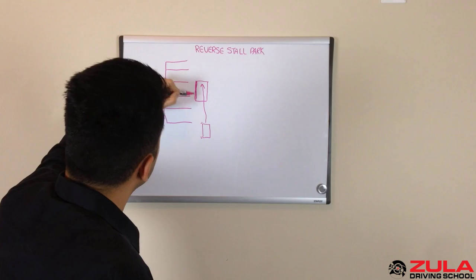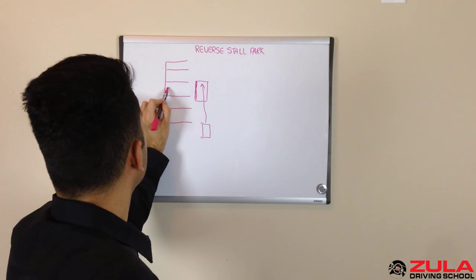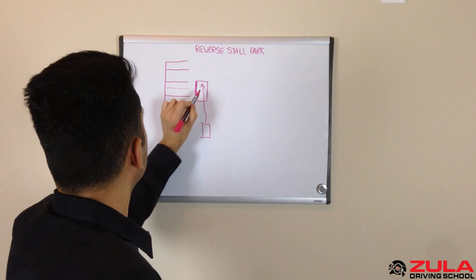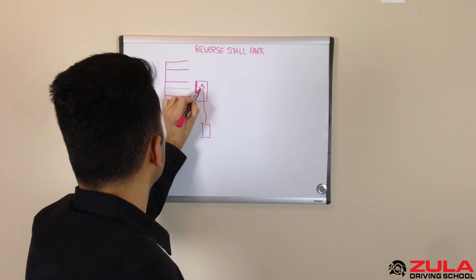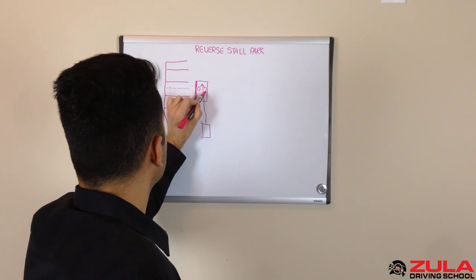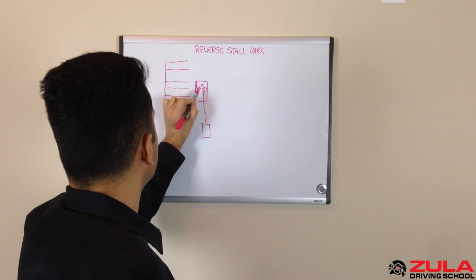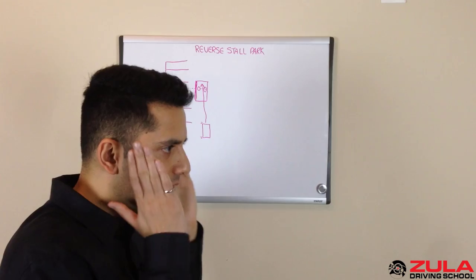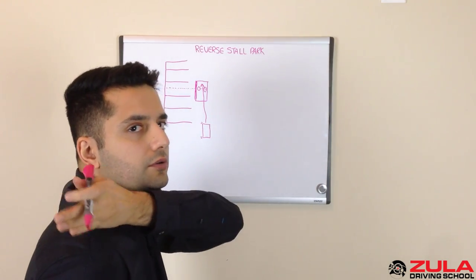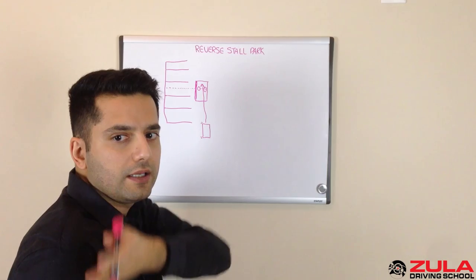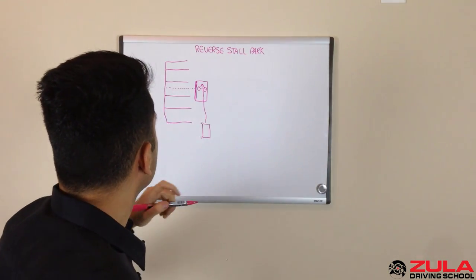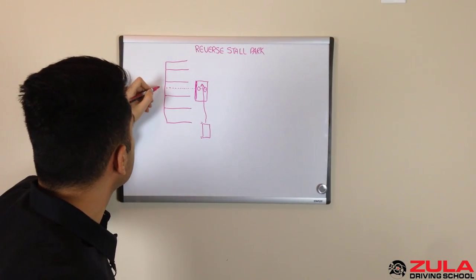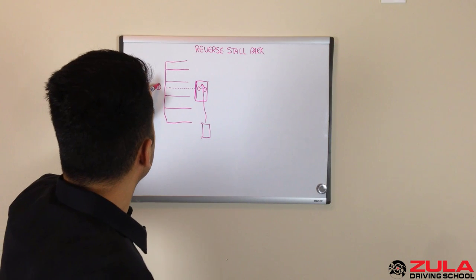You want to stop the car when your torso is in the middle of this stall. Not your head, because sometimes your head might be a little bit more forward than your body, but your actual torso should be sitting in line with this parking stall that you're interested in. This is step one.